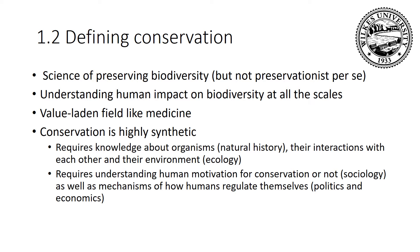Conservation biology can be defined many ways. In the late 1980s and early 1990s, we looked at it as the science of preserving biodiversity. What conservation biologists do is understand the impact of humans on biodiversity at all those scales — genetic diversity, species diversity, and ecosystem services. Conservation biology is a value-laden field, much like medicine. In medicine, we don't want people to die or be sick. In conservation biology, we don't like extinction due to humans. We recognize natural extinctions exist, but those driven by humans are seen as bad. We see degraded ecosystems and degraded ecosystem services as bad.